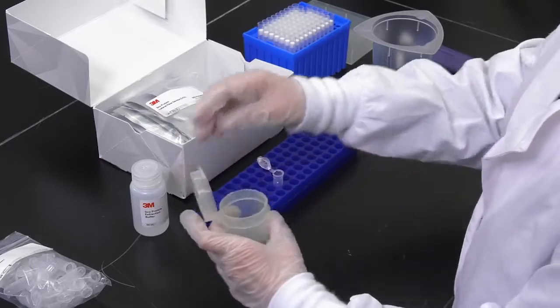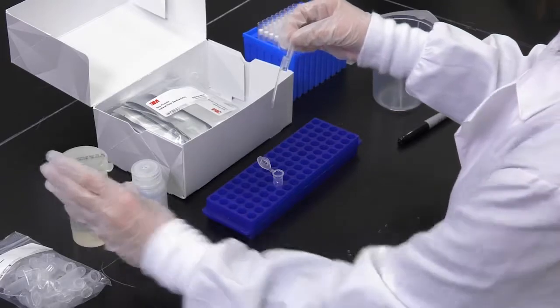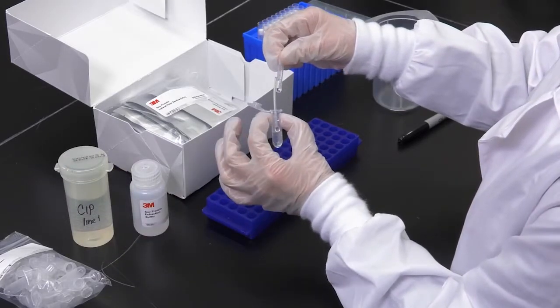Next, add 200 microliters of the clean-in-place (CIP) final rinse water sample. Shake vigorously or vortex for 15 seconds to mix thoroughly.